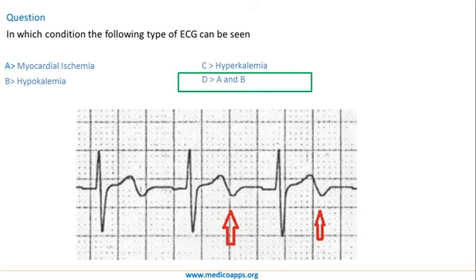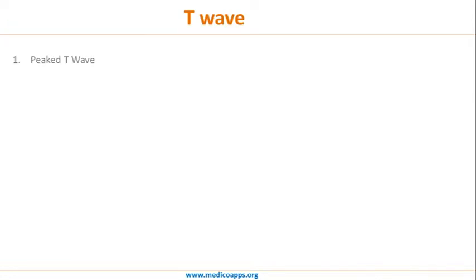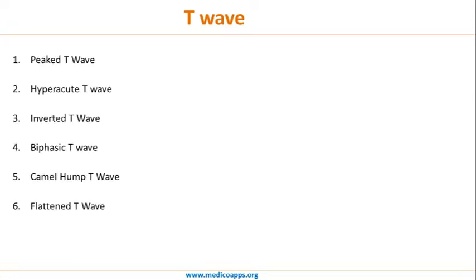Let's look further at the different morphologies for T waves. T wave morphologies are of these different types: peaked T wave, hyper acute T wave, inverted T wave, biphasic T wave, camel hump T wave, and flat T wave. These are the six different kinds of T waves. Let's look at each one, the morphology of the T wave, and in which conditions they are found.